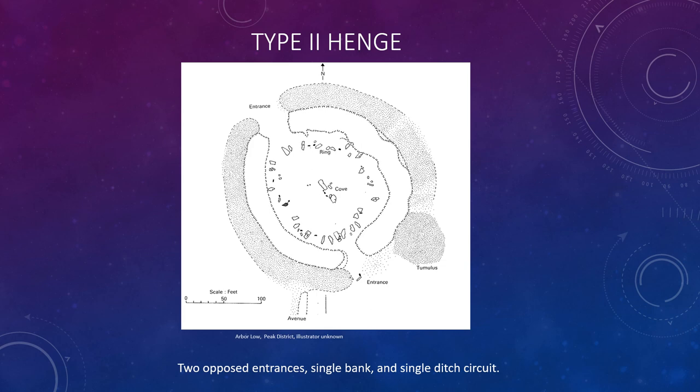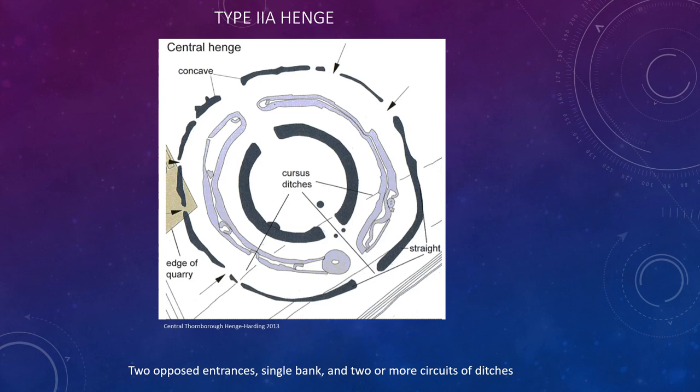The Type 2a henges are made up of two opposed entrances, a single bank and two or more circuits of ditches. The example on the screen is the central Thornborough henge, which is one of three, and that's from Yorkshire.